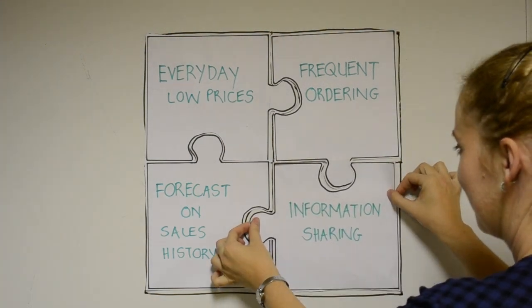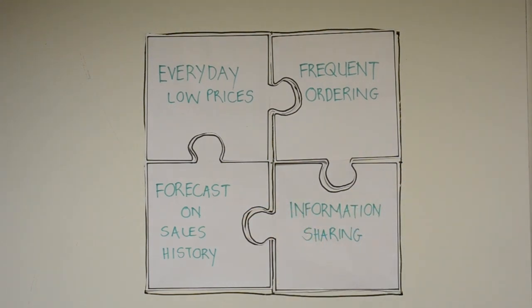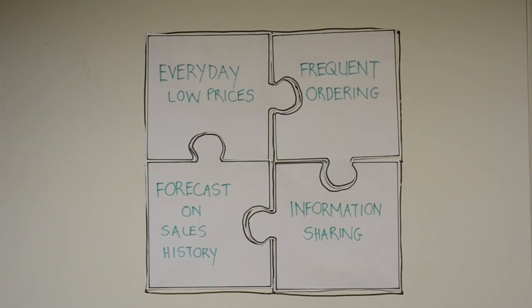Countermeasures to demand forecast inaccuracies: lack of demand visibility can be addressed by providing access to point of sale data. Single control of replenishment or vendor management inventory can overcome exaggerated demand forecasts. Long lead times should be reduced as much as possible.